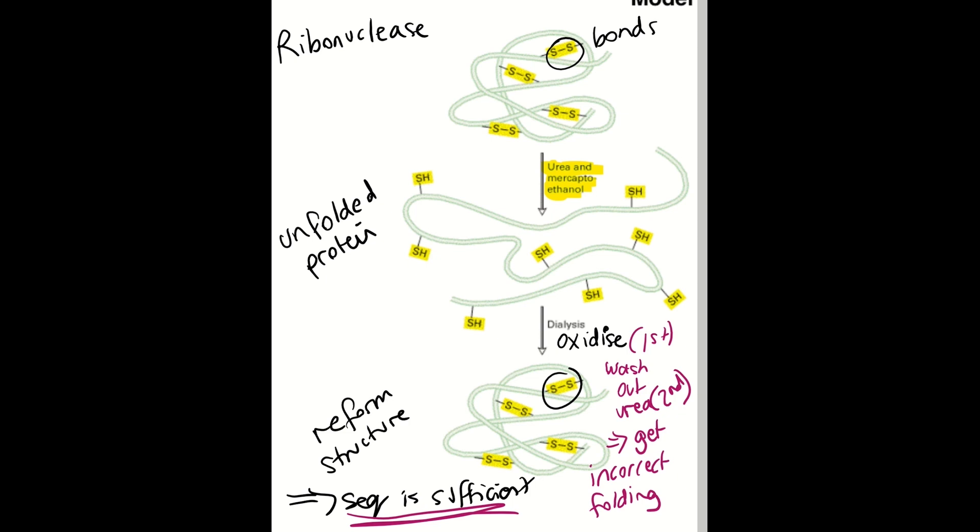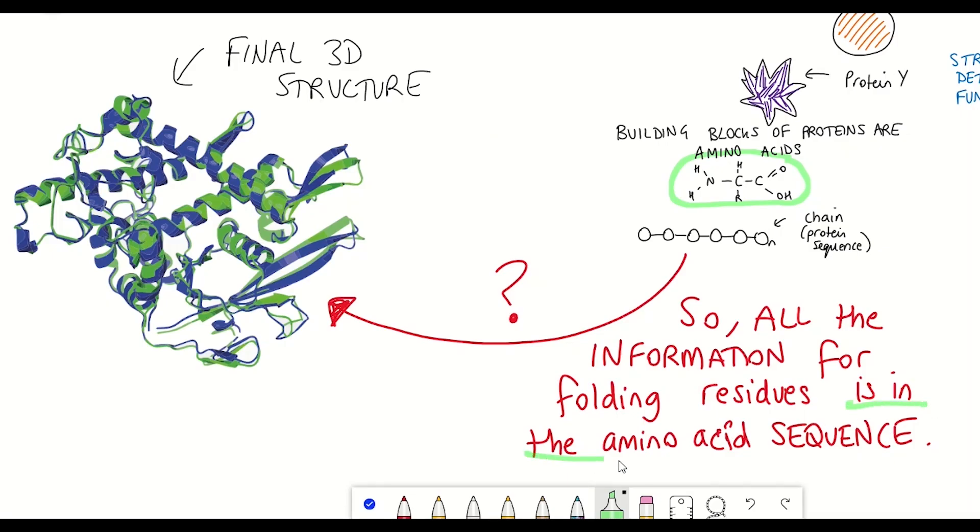And so effectively what all of this does prove is that all of the information that we need is in the amino acid sequence. And so the question then is how? Hence the protein folding problem.